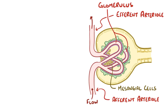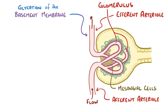Because glucose can get through the endothelium, this process of glycation can also involve the basement membrane of small blood vessels, which makes it thicken. This process particularly affects the efferent arteriole, causing it to get stiff and more narrow — a process called hyaline arteriosclerosis.